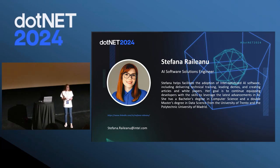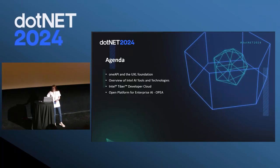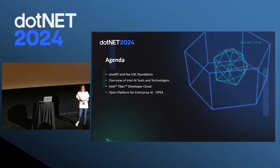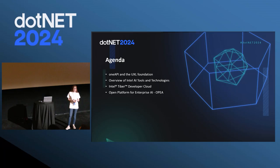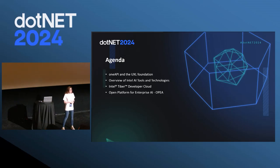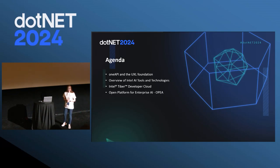We will talk about some tips and tricks for improving performance of AI, and also about how Intel is trying to build an open ecosystem and how you can contribute. On the menu today: I will talk about OneAPI and the UXL Foundation, why it's relevant for AI, and then some tools and technologies covering several domains that are part of AI — not just generative AI, which right now is obviously very popular. We'll also talk about the Intel Tiber Developer Cloud, and finally the open platform for enterprise AI and the community we are trying to build for generative AI solutions.